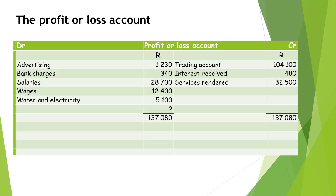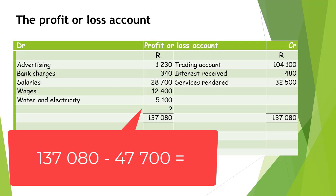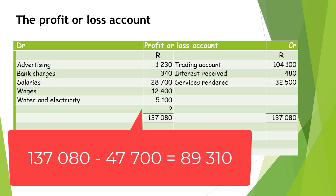We now write the largest of the two totals on the debit and credit side. Next, we need to calculate the amount of net profit or net loss which will be transferred to the capital account. R137,080 less R47,700 equals R89,310 to be transferred. Since the credit side total is bigger than the debit side total, it means that the income for the period exceeds the expenses and therefore the business made a net profit.